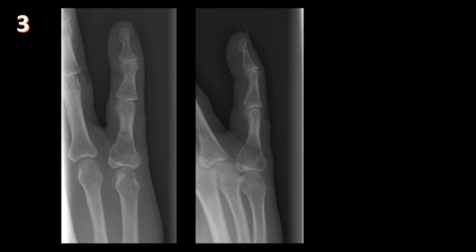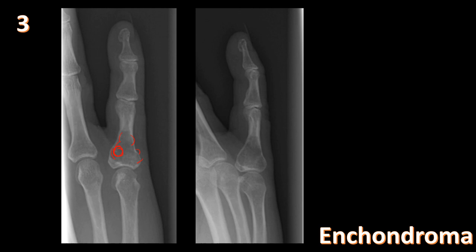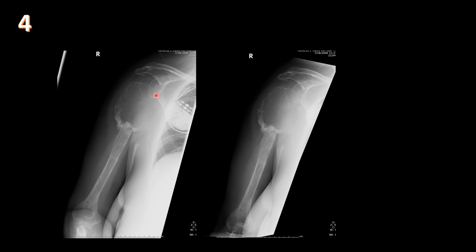Third case: views of the little finger show a lucent lesion within the base of the proximal phalanx — slightly expansile, with endosteal scalloping and a small chondroid matrix. This is an enchondroma. For the boards, any lucent lesion that is slightly expansile in the hand should make you think of enchondroma first. You don't need to see chondroid matrix, but when present it helps confirm the diagnosis. The lesion weakens bone and may be associated with a pathological fracture.